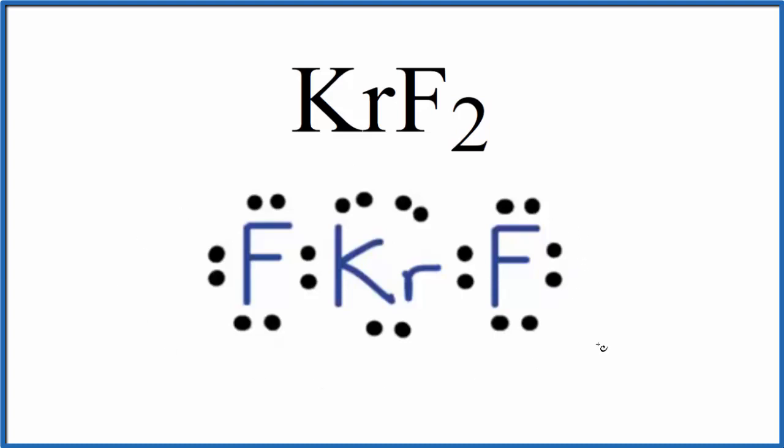So we start with a valid Lewis structure for KrF2. We have these two fluorine atoms bonded covalently to the krypton, but we also have one, two, three lone pairs around that central krypton atom. Krypton can have an expanded octet. It can have more than eight valence electrons.